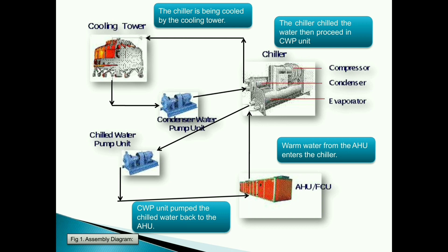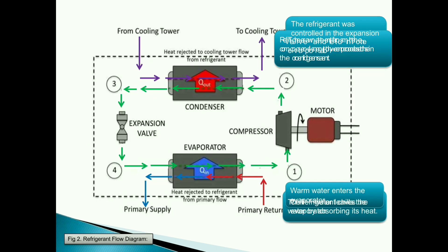Warm water from the AHU enters the chiller. The chiller chills the water, which then proceeds to the chilled water pump unit. The CWP unit pumps the chilled water back to the AHU. The chiller is being cooled by the cooling tower.